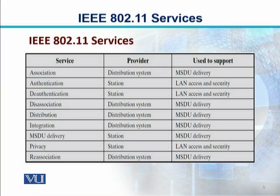For example, the first service is association — the provider is the distribution system and it is used to support MSDU delivery. Then authentication, whose provider is the station, is used for LAN access and security. De-authentication is also provided by the station for LAN access and security.